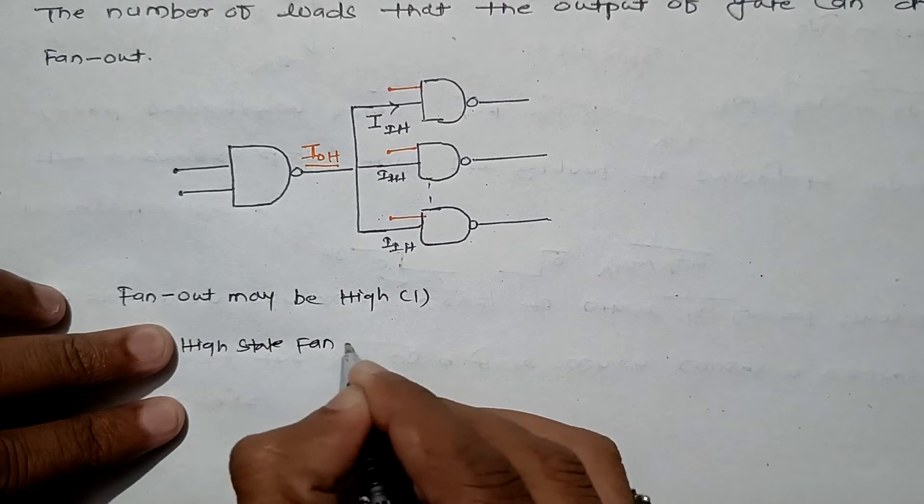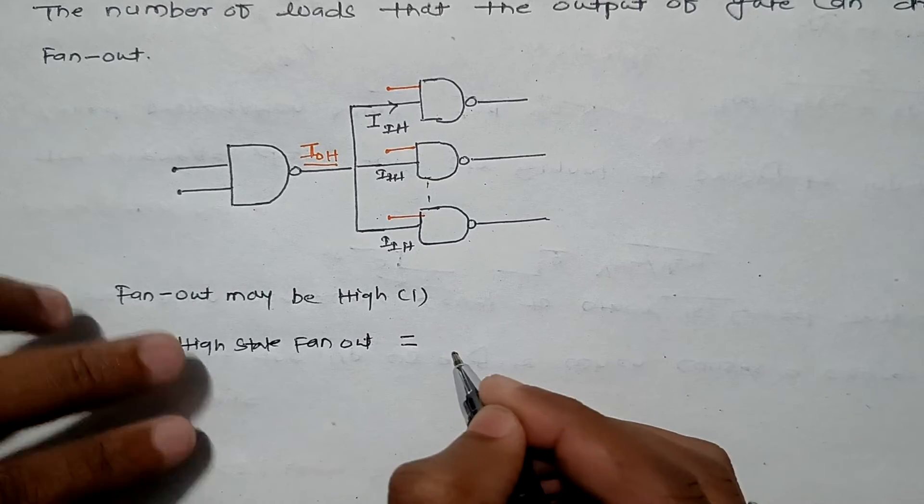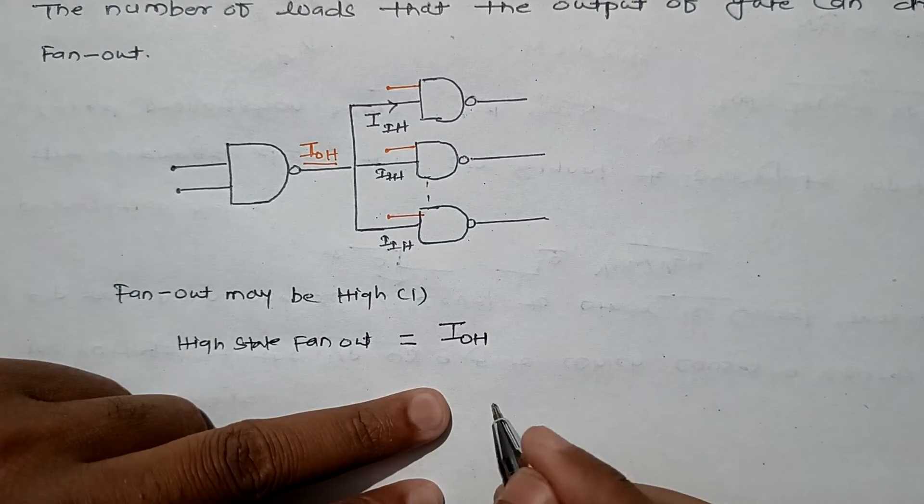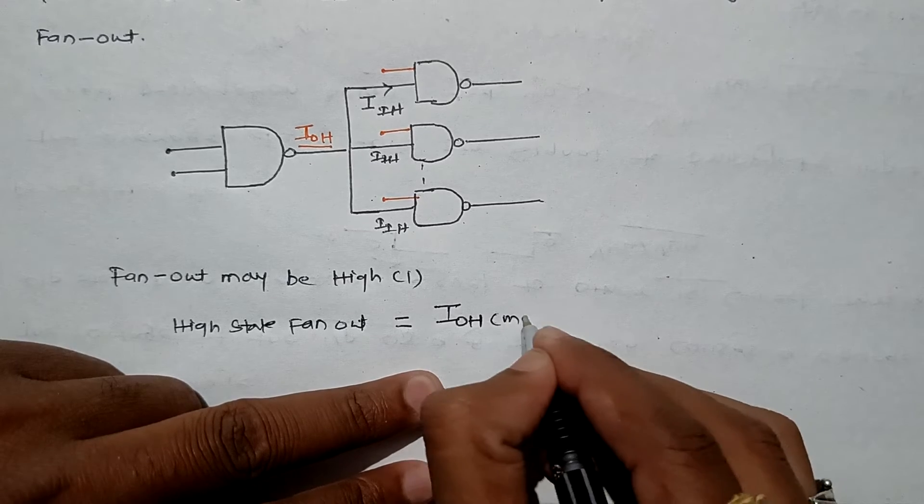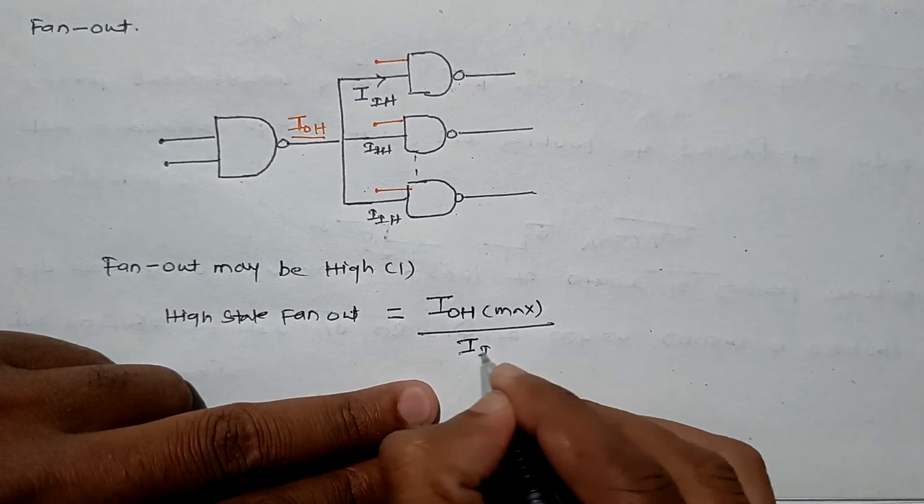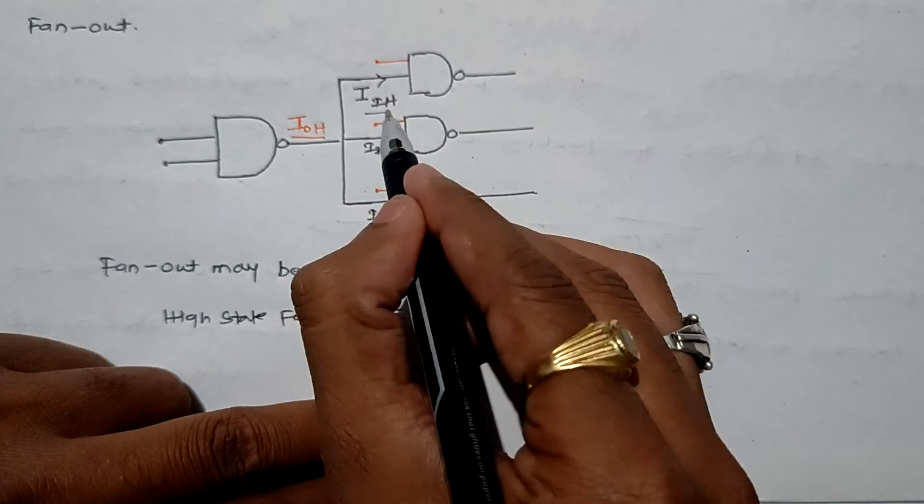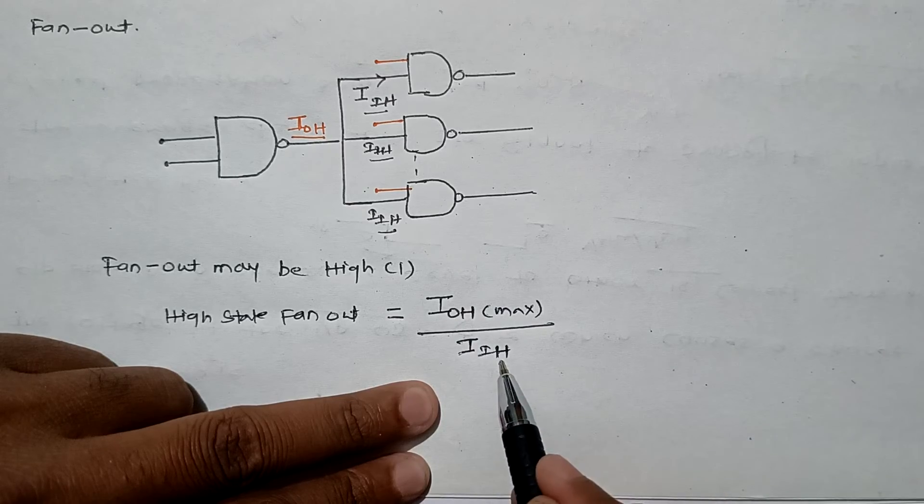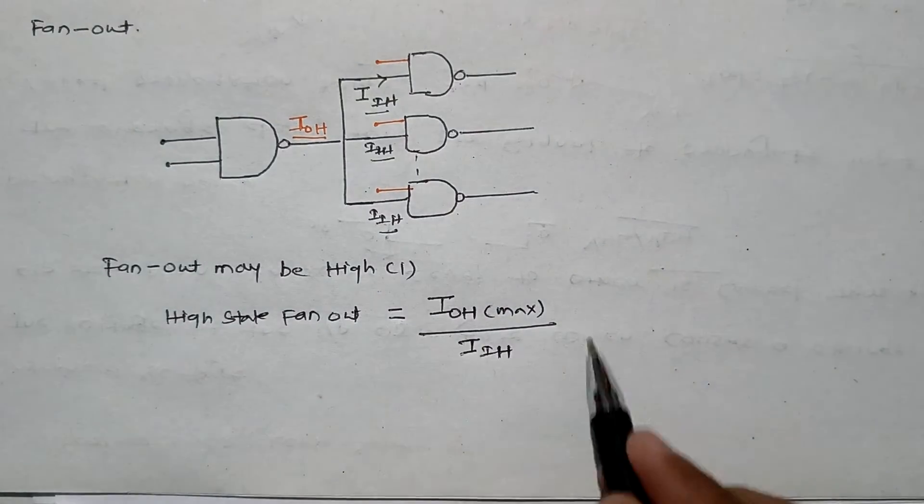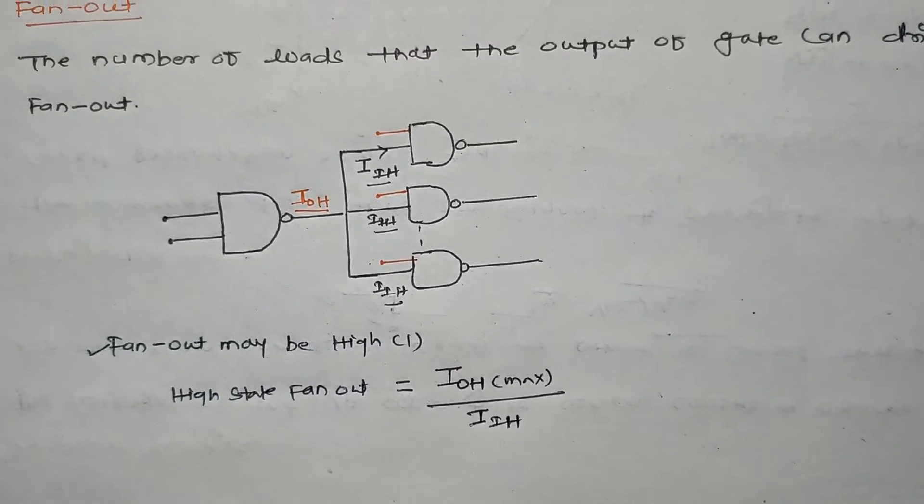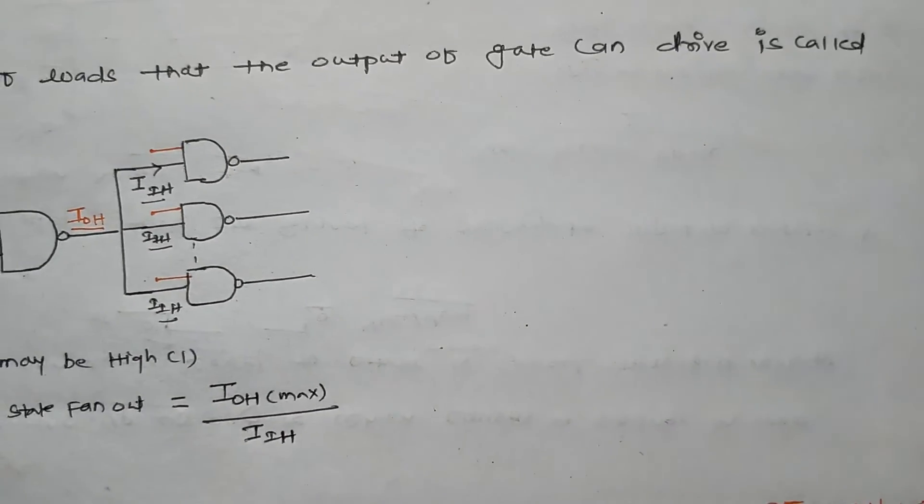High state fan-out is nothing but the ratio of high output current maximum (IOH max) divided by high input current (IIH). This is the formula to determine fan-out when it is in high state.